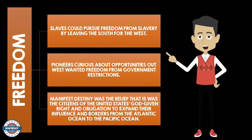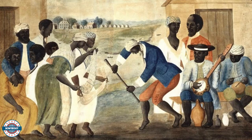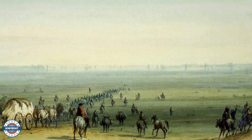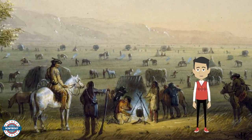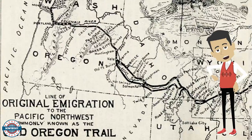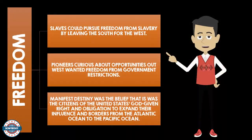And lastly, a motivating factor for migrating west was freedom. Slaves could pursue freedom from slavery by leaving the south for the west. Pioneers curious about opportunities out west wanted freedom from government restrictions. And Manifest Destiny was the belief that the citizens of the United States had a God-given right and obligation to expand their influence and borders from the Atlantic to the Pacific.